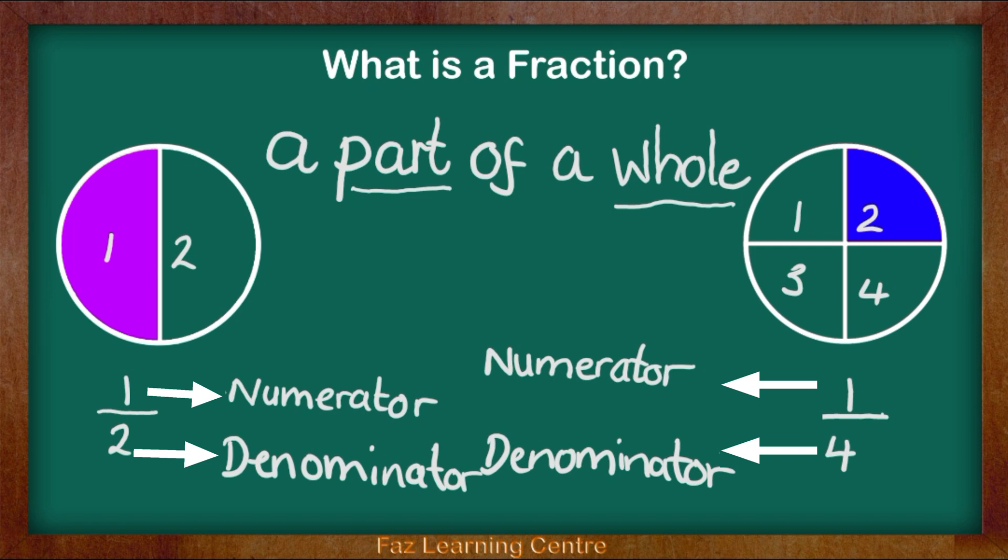So how can we remember which one is which? As you can see, we have the division line and then we have a number on top and we have a number on the bottom. So we could say the numerator starts with the letter N. Therefore, we could say the top fraction which is N represents North.